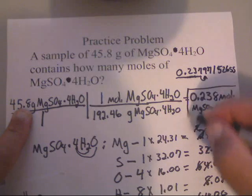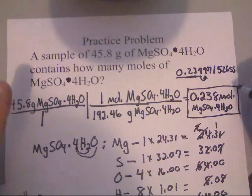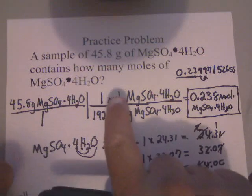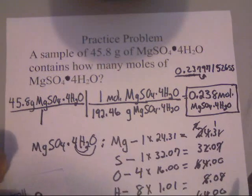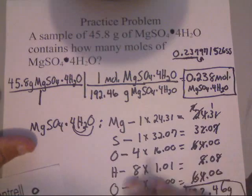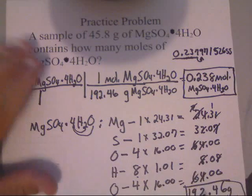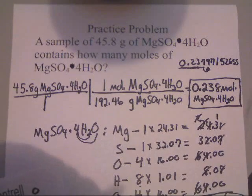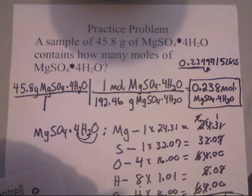So, my answer is going to be 0.238 moles of this MgSO4·4H2O. And, that's it. That's how you convert from grams to moles. I hope this video helps. And, this was a little bit of a refresher of your molar mass, too, down here. All right, guys.